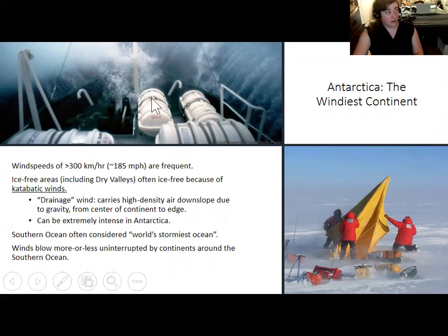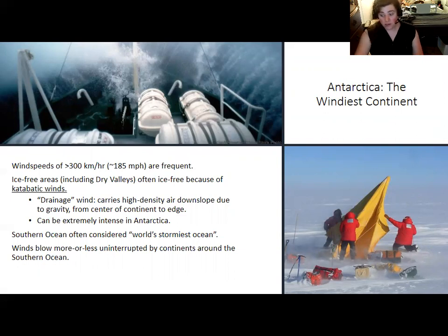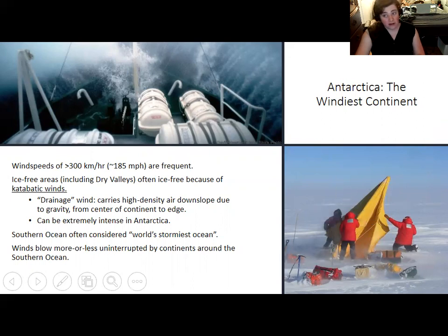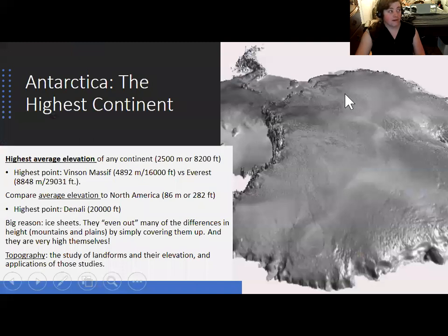The Southern Ocean is also considered the world's stormiest ocean because winds can blow basically uninterrupted in a circle around the continent. Most people who ventured near the Southern Ocean early in Antarctica's history wisely decided not to go farther. I can attest that setting up tents during windy conditions is miserable. I didn't have snow blowing in my face in the dry valleys, but when that's your only shelter and you can't get it up because of the wind — it's rough.